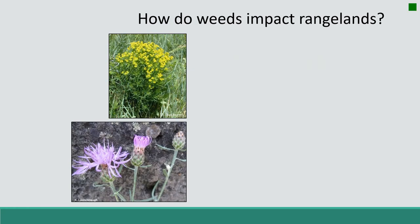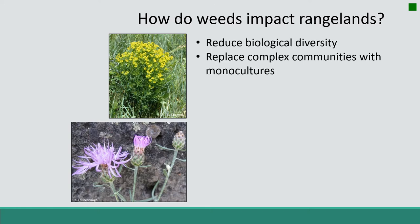After you watch the video by Outdoor Idaho you'll have some idea of how weeds can impact rangelands. We'll briefly discuss a few here. First, they reduce biological diversity — not just in plants, but we also lose insect and wildlife diversity due to the large monocultures they create, meaning areas of just one species.